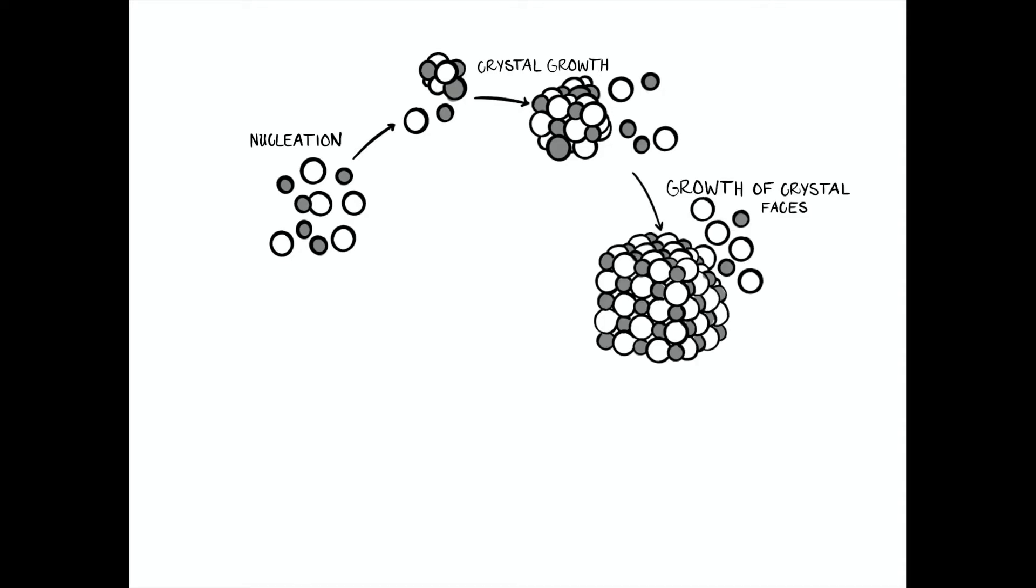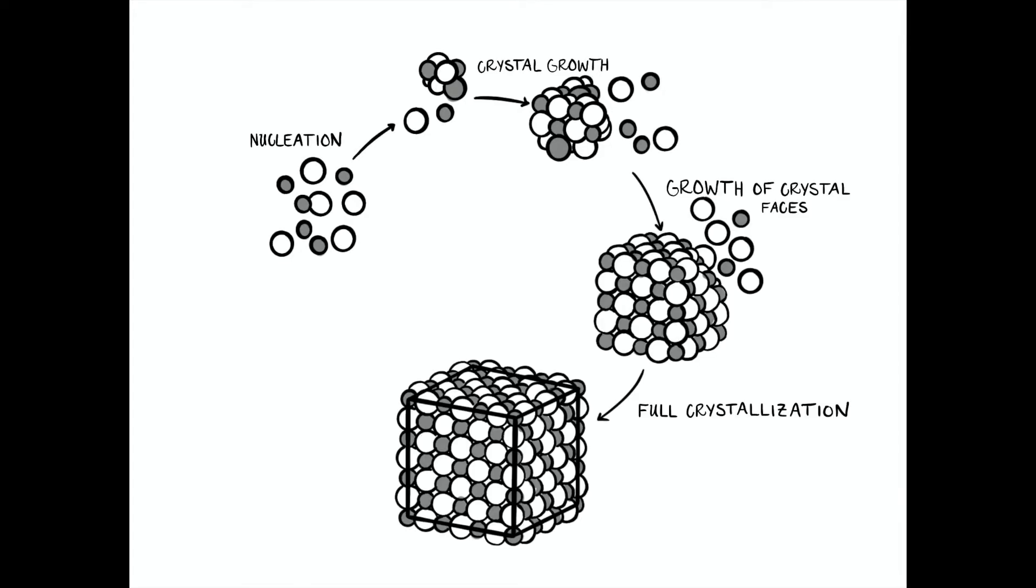Crystallization is the process in which molecules arrange themselves into nice uniform shapes or planes. It starts with nucleation, followed by growth, formation of crystal faces, and with a little time, you finally have a mature crystal.